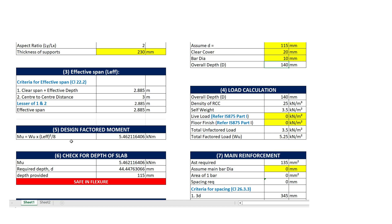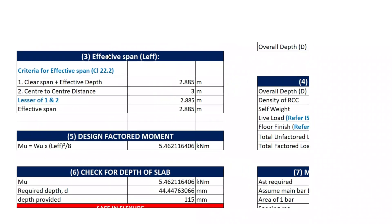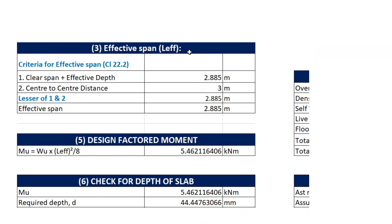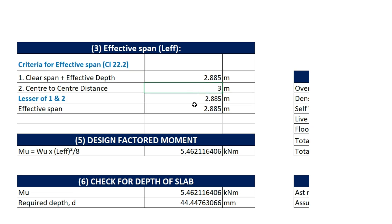Moving to the third step, in which we need to calculate the effective span of the slab. The value of effective span will automatically be calculated as this depends on two criteria according to clause 22.2 of IS 456-2000. The first one being clear span plus effective depth, which is 2.88 meters. The second criteria is center to center distance, and whichever is the lesser value among these two will be the effective span. So the effective span of the slab will be 2.885 meters.